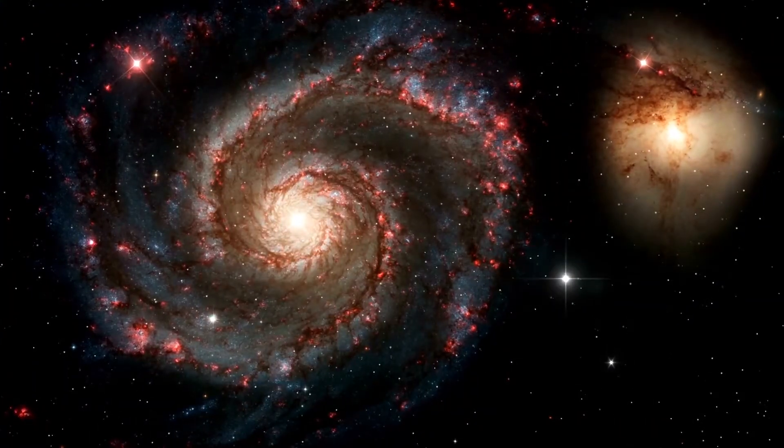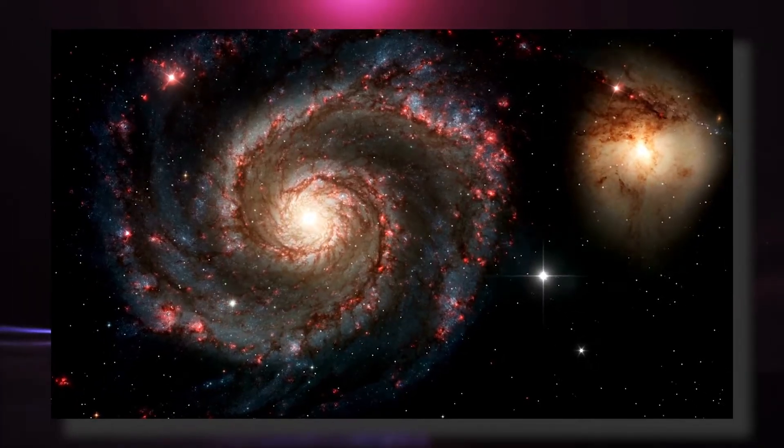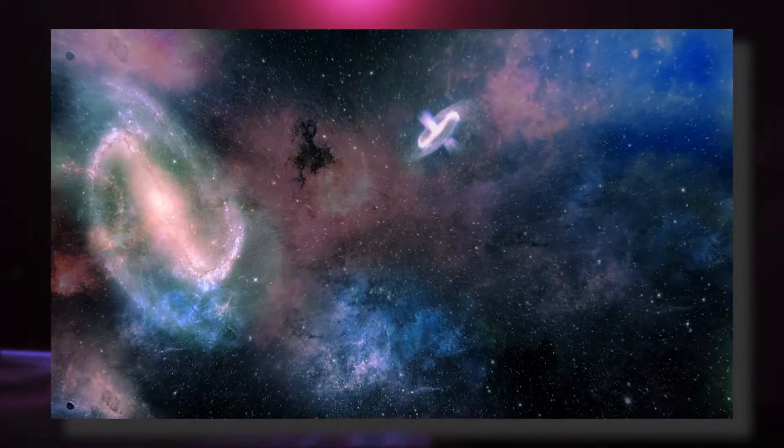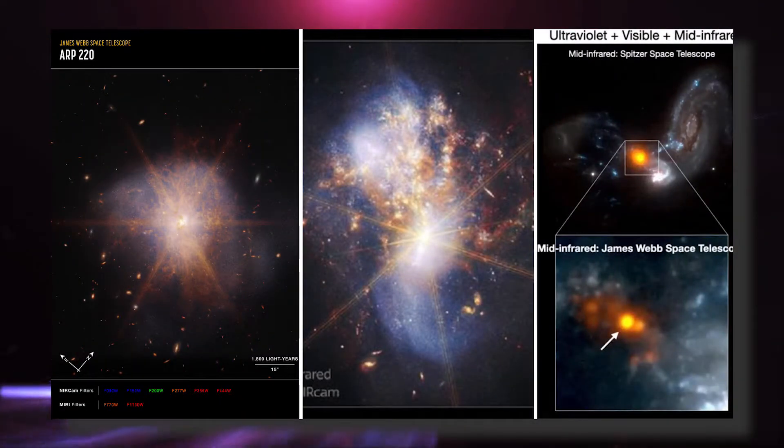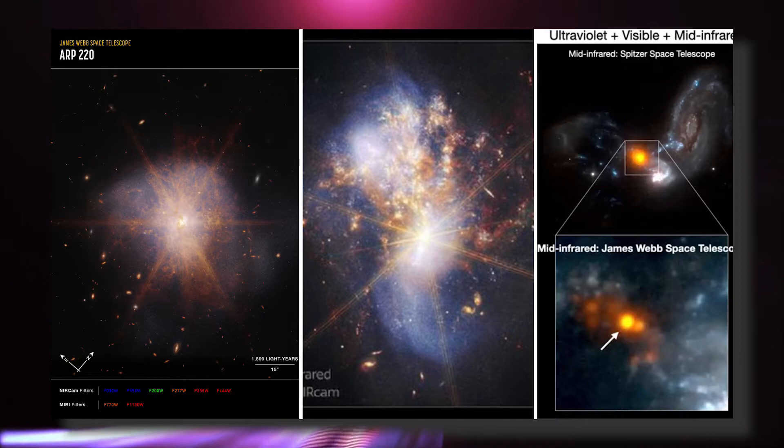NASA has made an exciting announcement about the galactic merger ARP 220, which was captured by the James Webb Space Telescope. When two spiral galaxies merge, the phenomenon known as ARP 220 shines brightest in the infrared, making it perfect for observation by the James Webb Space Telescope.